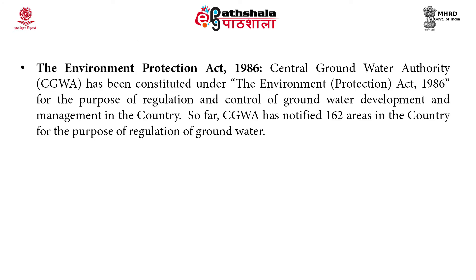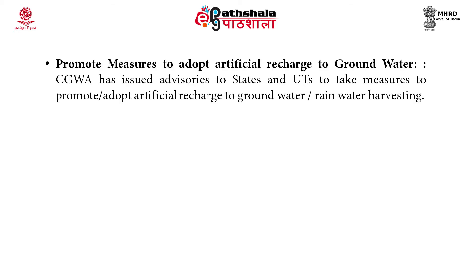Third, the Environment Protection Act 1986: the Central Groundwater Authority has been constituted under the Environment Protection Act 1986 for the purpose of regulation and control of groundwater development and management in the country. So far, CGWA has notified 162 areas in the country for the purpose of regulation of groundwater. Fourth, promoting artificial recharge: the Central Groundwater Authority has issued advisories to states and union territories to take measures to promote or adopt artificial recharge to groundwater or rainwater harvesting.